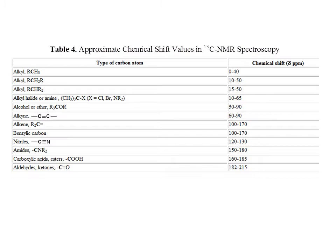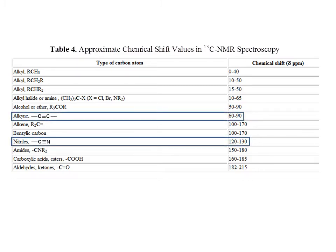Two specific areas to highlight are alkynes and nitriles, because in the infrared spectrum there is complete overlap between where those two functional groups absorb. But in carbon-13 NMR spectroscopy, they appear in completely different regions: alkynes show up between 60 and 90 parts per million, whereas nitriles show up at 120 to 130 parts per million, allowing you to easily distinguish between the two types of carbons.